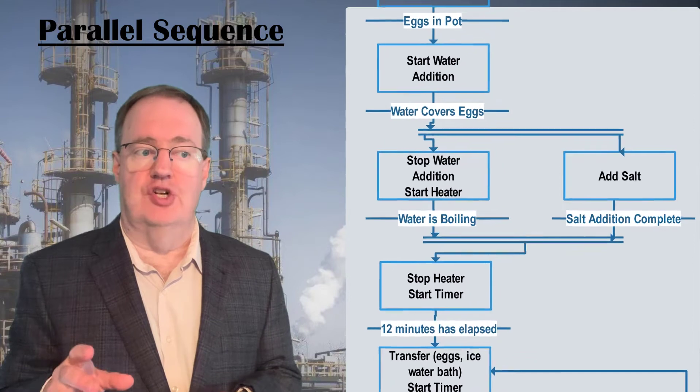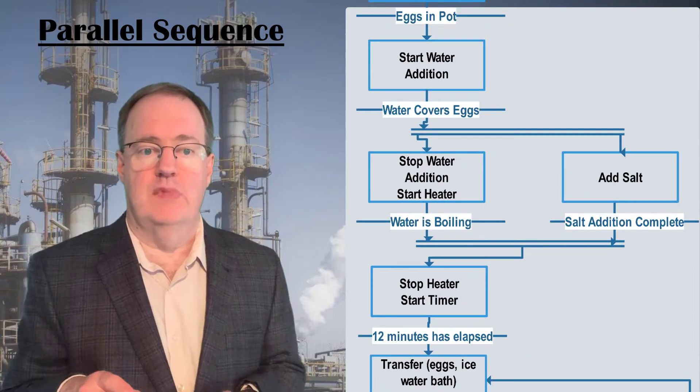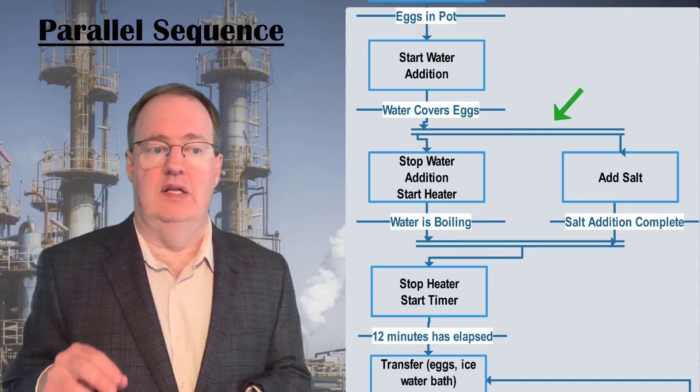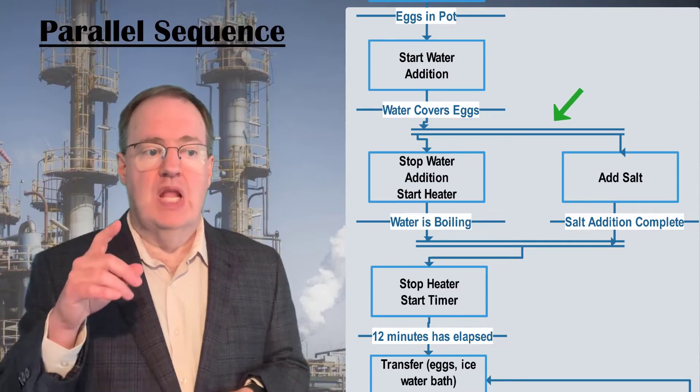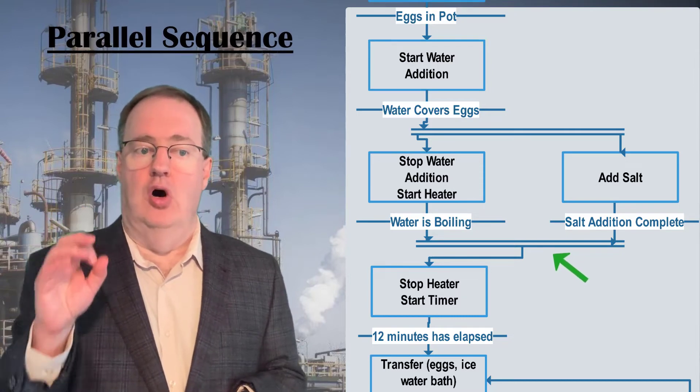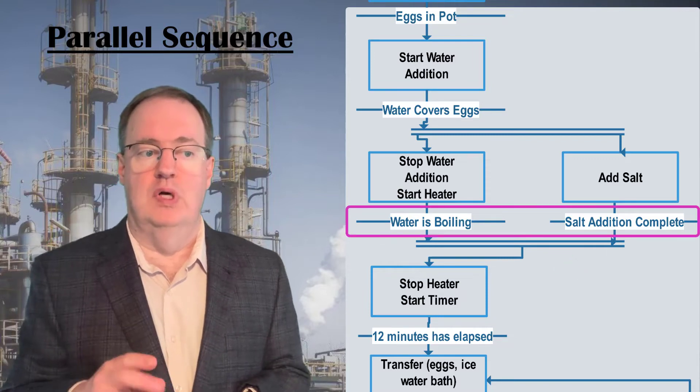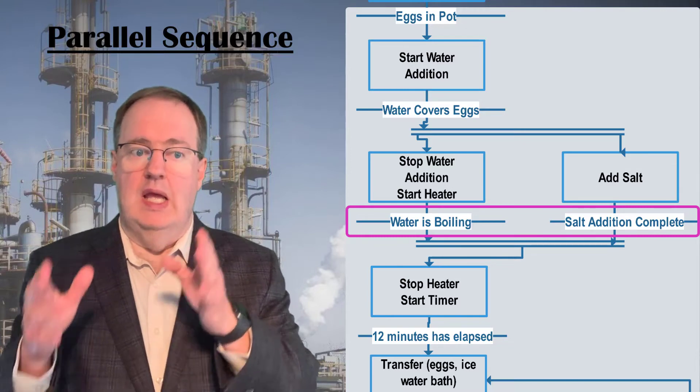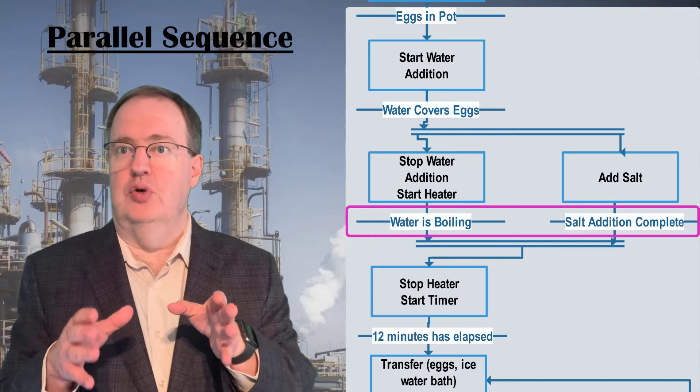Let's add a salt addition to our egg-boiling recipe that occurs in parallel to the heat-up. A double horizontal line indicates the beginning and end of parallel sequences. At the end of the parallel sequences, they must come together at another double line, and all of the final transitions in the parallel branches must be true before the sequence can proceed. So, water boiling and salt addition complete both need to be true in this case.